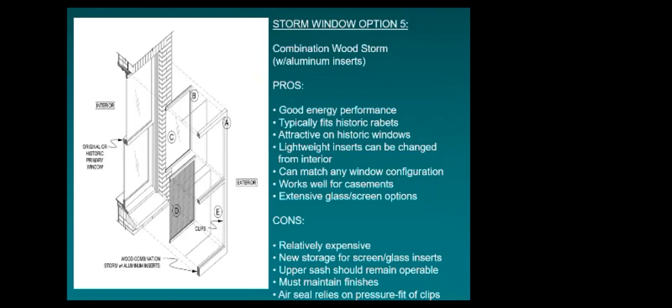Combination storms are definitely a step up — they require more fitting and tooling in the shop to make everything fit properly with more coordination of individual parts, but offer much more flexibility. You can have a screen or storm insert that you change out for just the lower sash or both sashes. More cost is involved, with savings available through choices like pine versus mahogany. We normally promote combination storms for windows that are operated a lot.